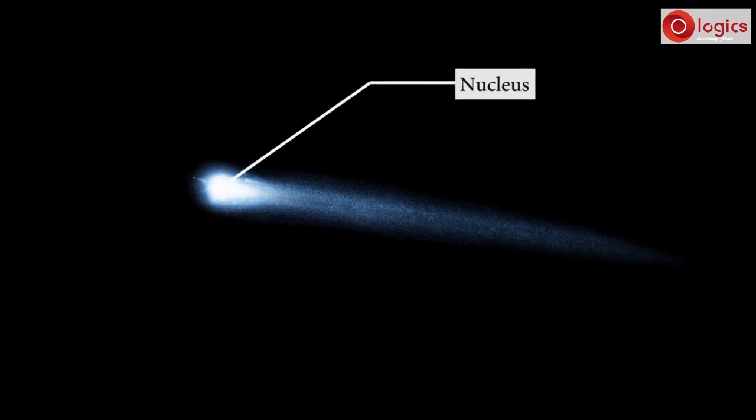The main body of the comet is called the nucleus, made of ice mixed with small amounts of dust and rock.